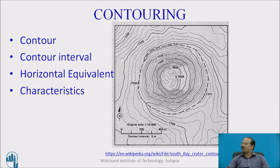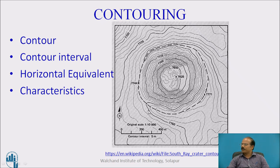This is a classical sketch of a crater. At the center, you can see 7628 is a spot level surrounded by 7650 and 7725. That means this is like a pond or a ditch, while from here onwards it falls down further and towards the corner it goes away. Therefore, this is a classical example of a contour map. The scale has been shown, and the contour interval is mentioned as 5 meters.